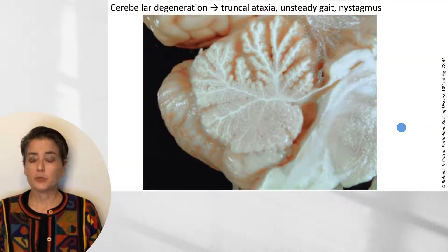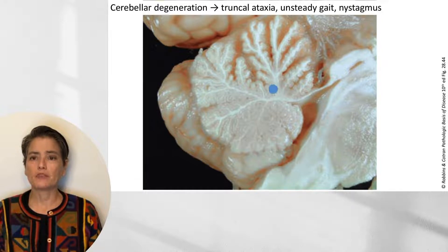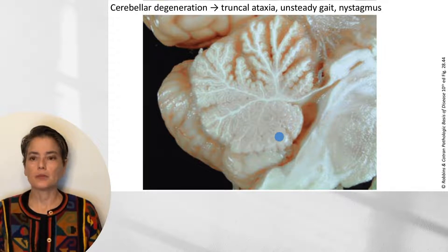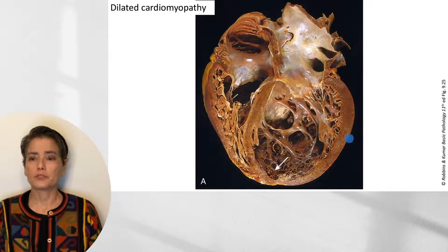Regarding cerebellar degeneration, which we can see in about 1% of patients, individuals present with truncal ataxia, unsteady gait, and nystagmus. This image beautifully shows the cerebellar vermis with easily appreciable degeneration in the folia — abundant space around the folia — compared to a more typical appearance. Finally, dilated cardiomyopathy from chronic alcohol use is shown here. This toxic insult to the heart results in cardiac failure due to the inability of the heart to pump efficiently.